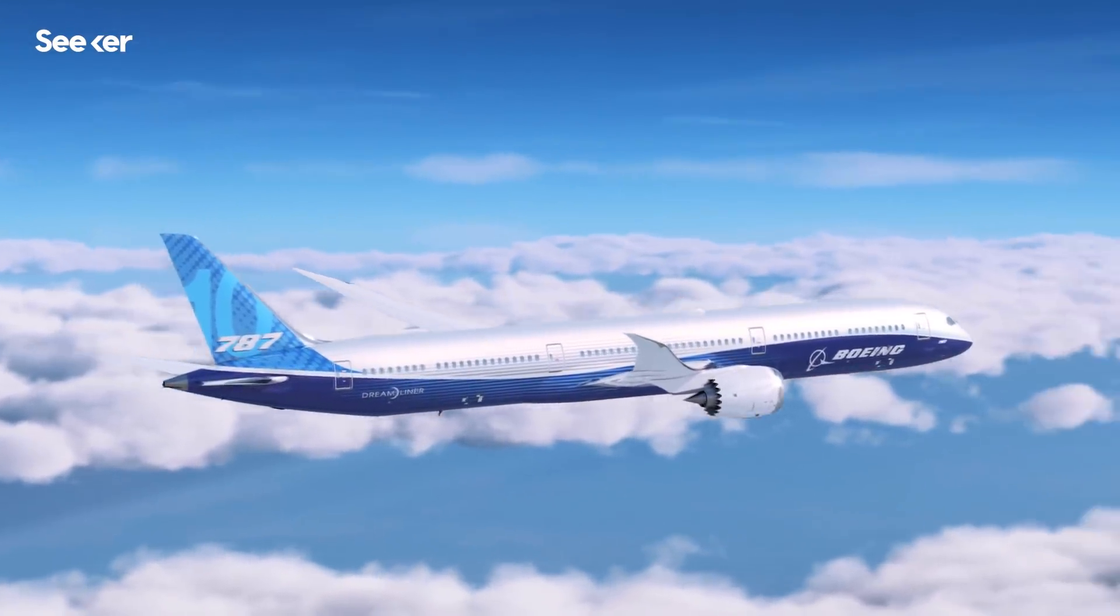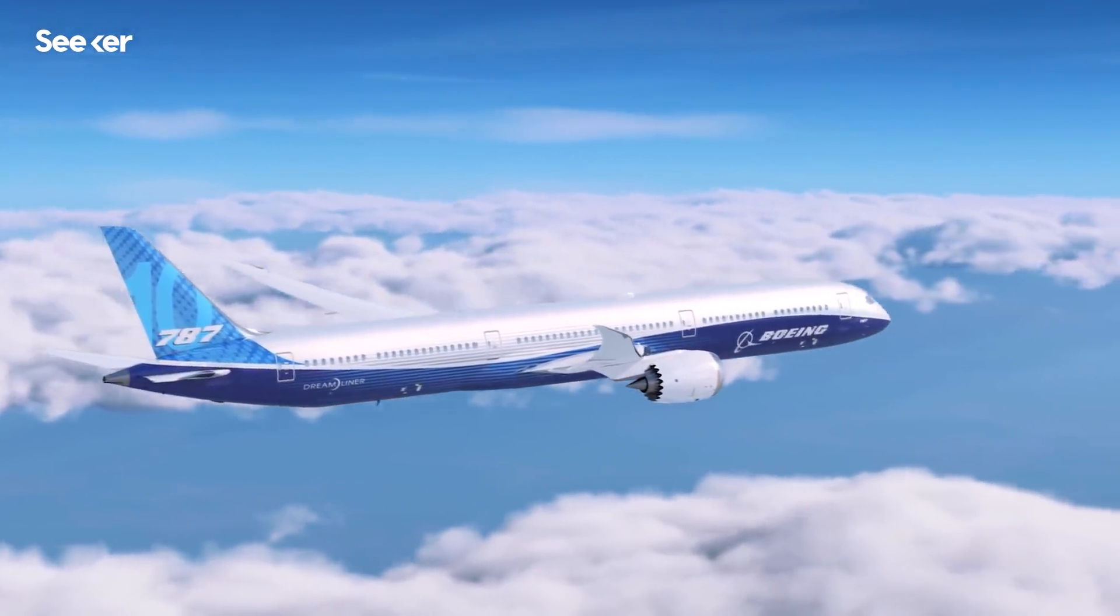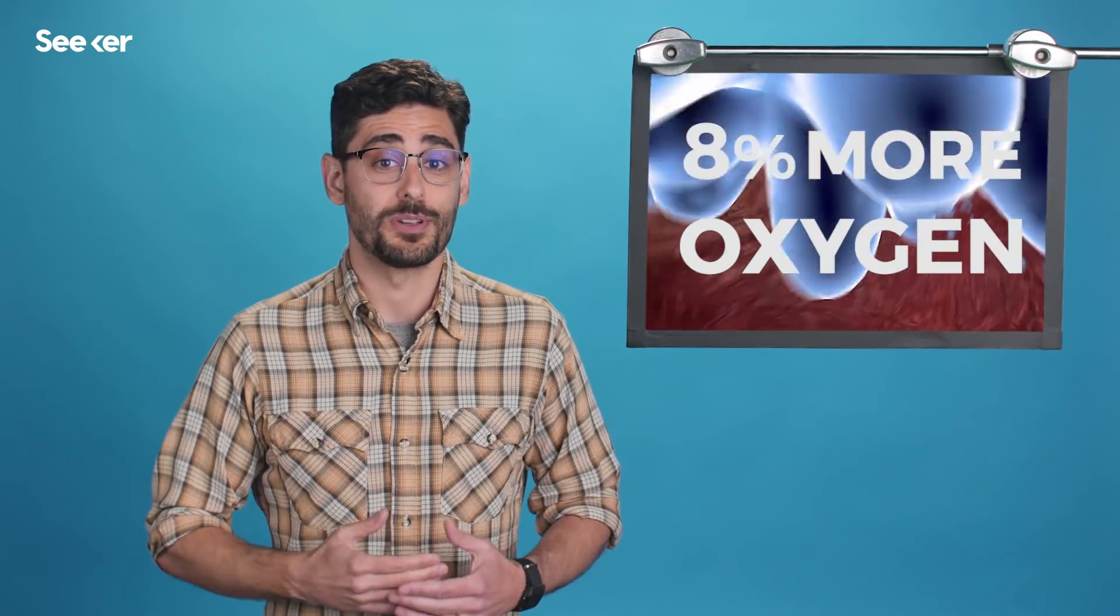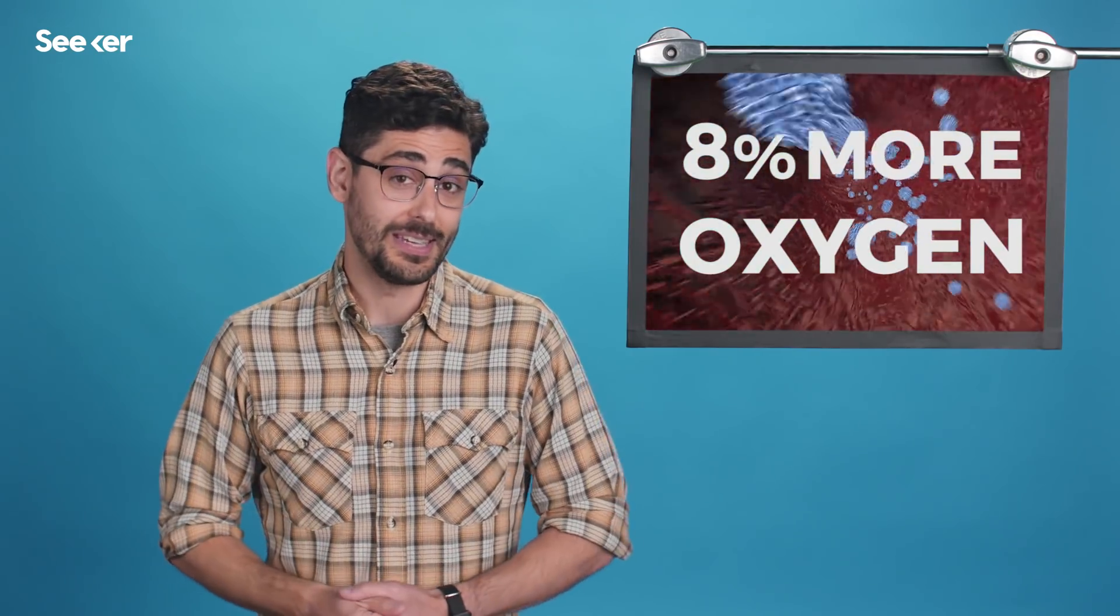Now, the Boeing 787 Dreamliner family of airplanes is pressurized to a new maximum level of 6,000 feet, 2,000 feet lower than most other aircraft. Altitude chamber tests from Boeing show that because the body absorbs 8% more oxygen into the blood at this altitude, passengers experience fewer headaches and less dizziness and fatigue.